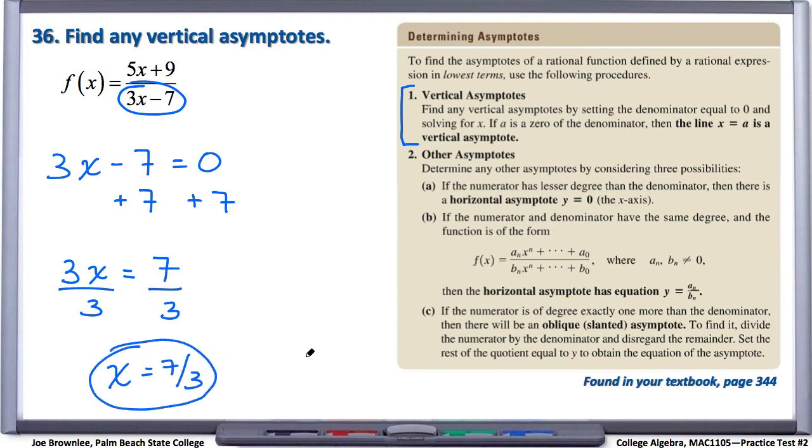x equals 7 over 3 is the equation of a vertical line. In this case, the equation of the vertical asymptote of the f of x function.